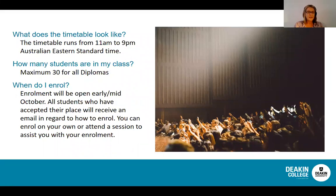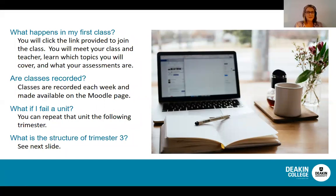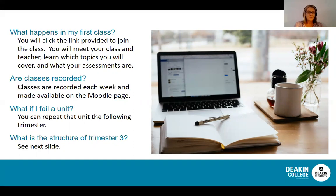Classes run for 12 weeks with a break in the middle of each trimester, and you can expect anywhere from 10 to 30 students per class. You will receive an email when your enrolment opens, and all students who have accepted a place will receive information on how to enrol and where to find orientation sessions. Orientation sessions are set up before the first week to help you select your classes, meet your teachers, and ensure you have access to the student portal. You will also have access to the Moodle page before week one so you can start to prepare and see a welcome message from your teacher. Classes are recorded each week and made available to view at another time on Moodle.